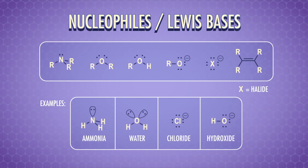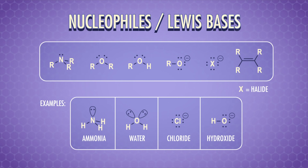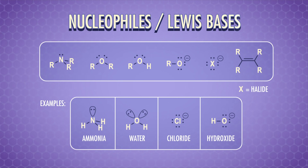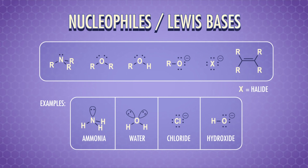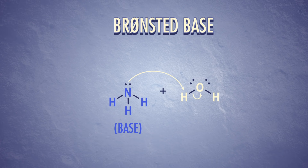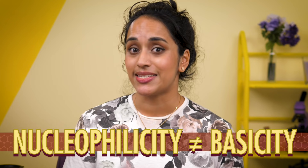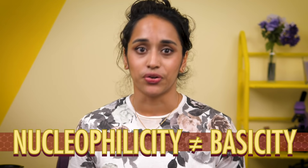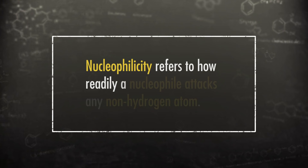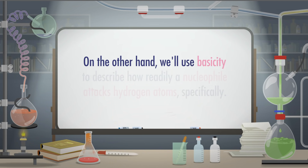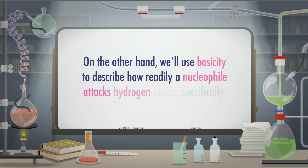A nucleophile is something with a non-bonded pair of electrons, or pi-bond. It has some spare electrons hanging around that it can generously give to something that's a bit electron-deficient. A Lewis base is something that can donate a pair of electrons, so all nucleophiles are Lewis bases. And if we consider Bronsted-Lowry bases, we know that nucleophiles are also potentially proton acceptors. Nucleophilicity refers to how readily a nucleophile attacks any non-hydrogen atom – in organic chemistry, that's usually going to be carbon.